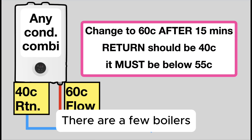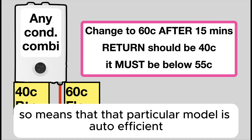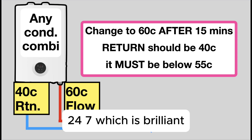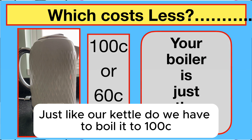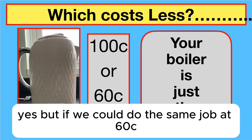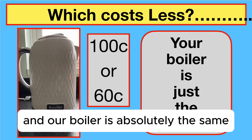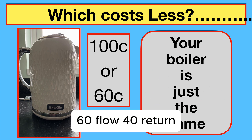There are a few boilers and manufacturers that do this job automatically, so that particular model is auto-efficient 24/7, which is brilliant. Just like our kettle — do we have to boil it to 100 degrees? Yes, but if we could do the same job at 60, that would save us a great deal of money. And our boiler is absolutely the same: 60 flow, 40 return.